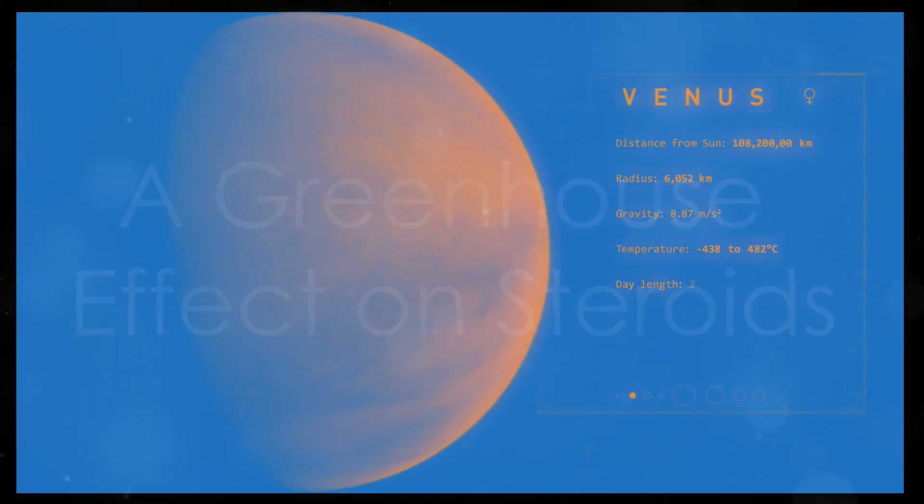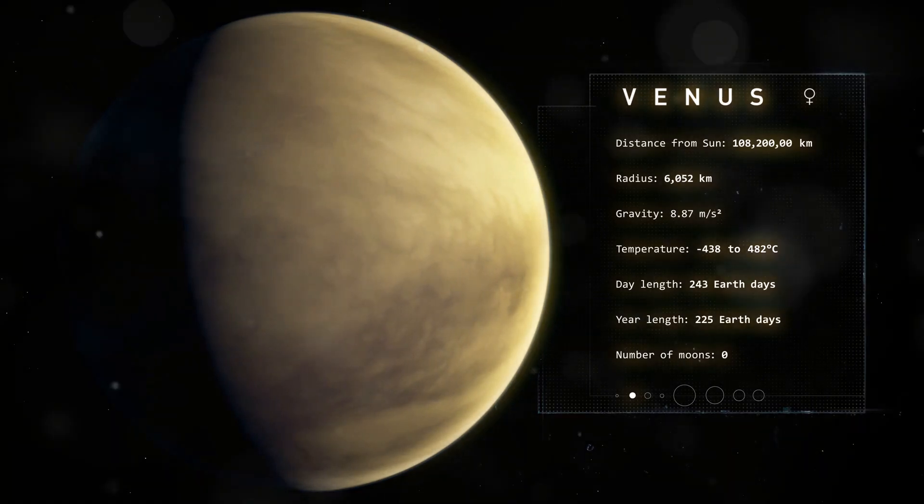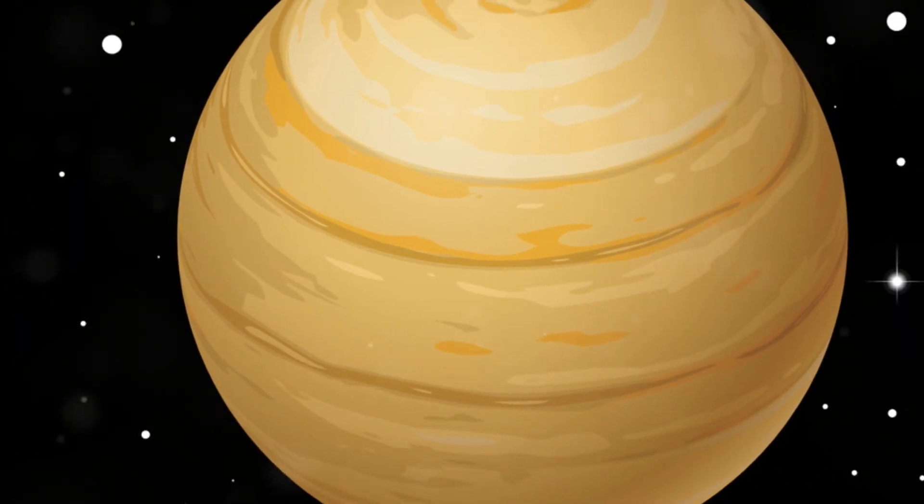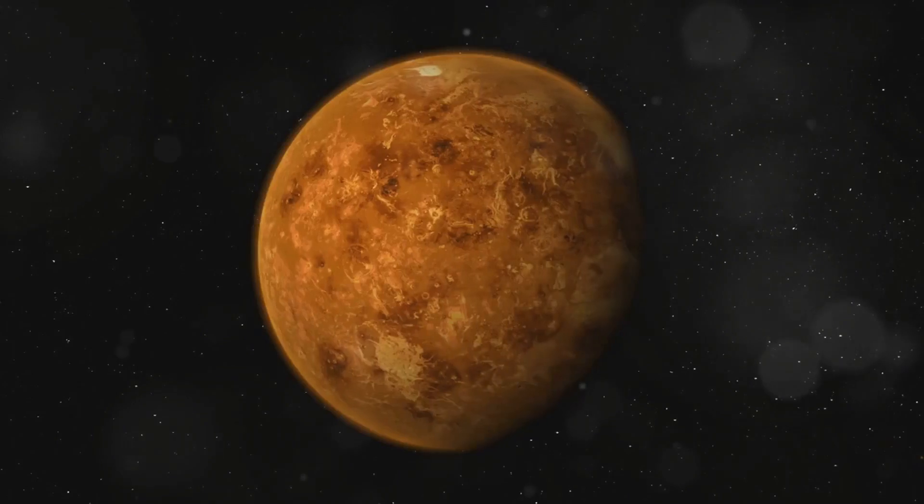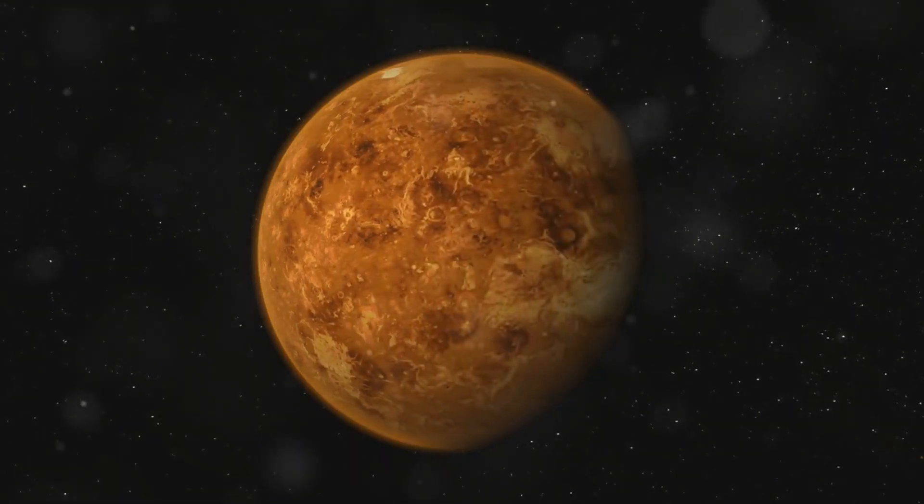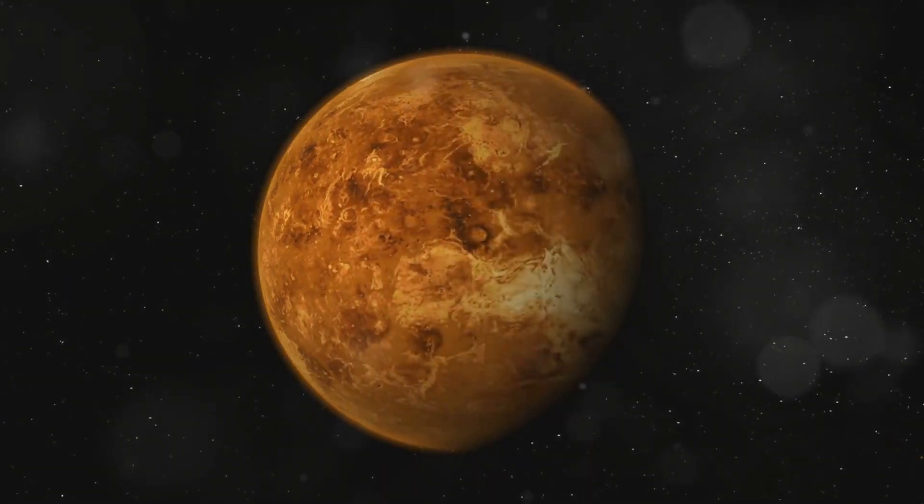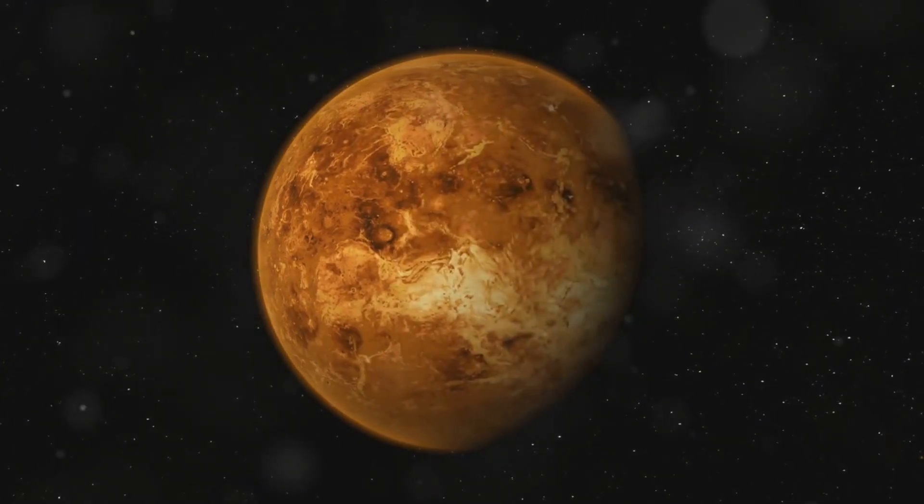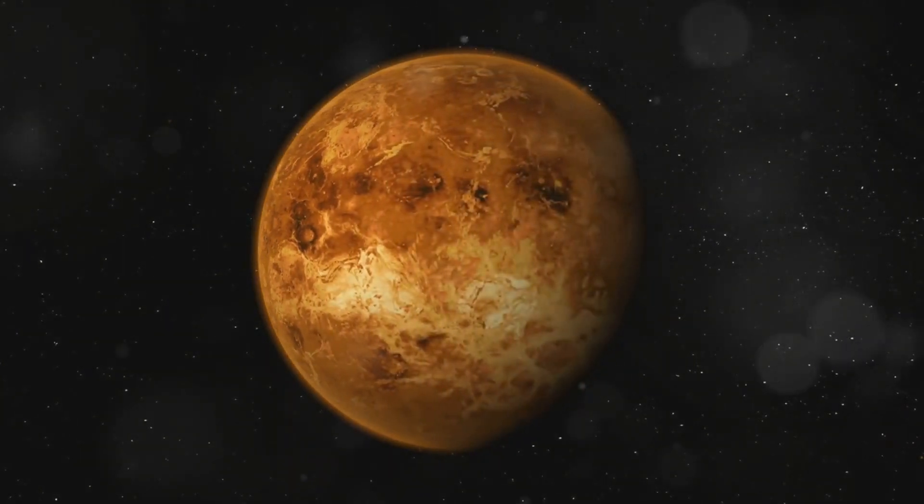The fundamental problem with Venus is its atmosphere. It consists mainly of carbon dioxide, which means a powerful greenhouse effect. On Earth, carbon dioxide is also responsible for warming our planet. But on Venus, the scale of this phenomenon is unimaginable.